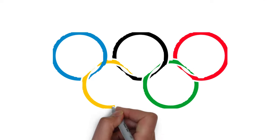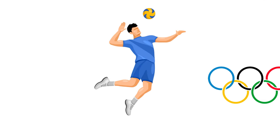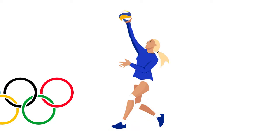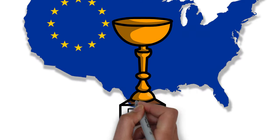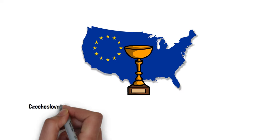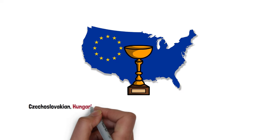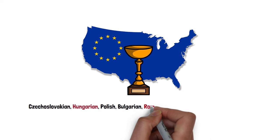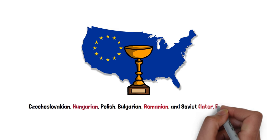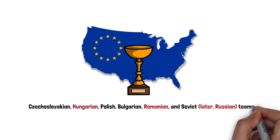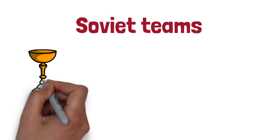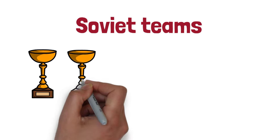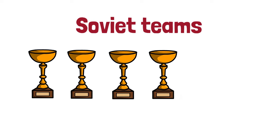Volleyball became an Olympic sport for both men and women at the 1964 Olympic Games in Tokyo. European championships were long dominated by Czechoslovakian, Hungarian, Polish, Bulgarian, Romanian, and Soviet — later Russian — teams. At the World and Olympic level, Soviet teams have won more titles, both men's and women's, than those of any other nation.